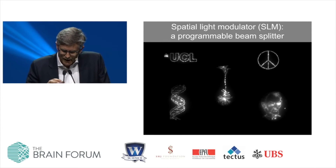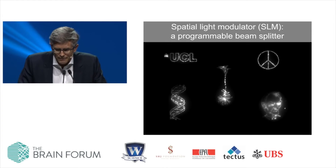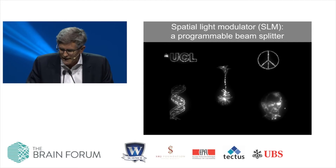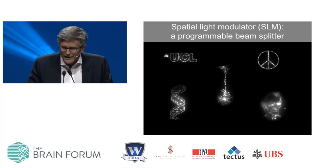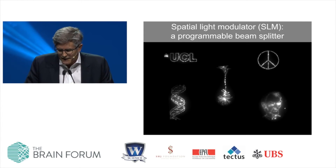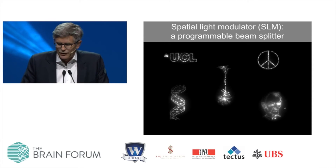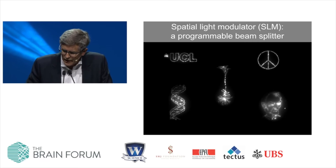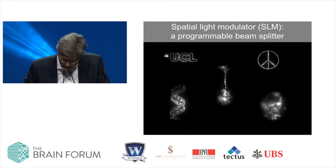One device we've been using is the spatial light modulator — a programmable diffraction grating that allows you to send precisely targeted beamlets of light into tissue to both read out and manipulate activity. Here are examples of how we use the spatial light modulator in our lab to produce different patterns of light — and with apologies to Francis Crick, that's an image of him in the bottom right.